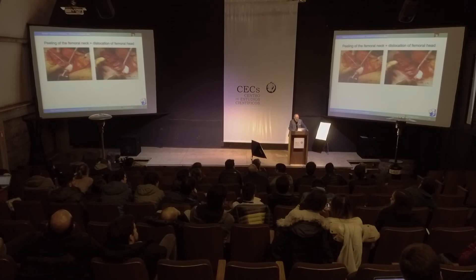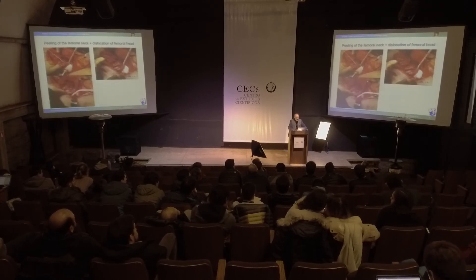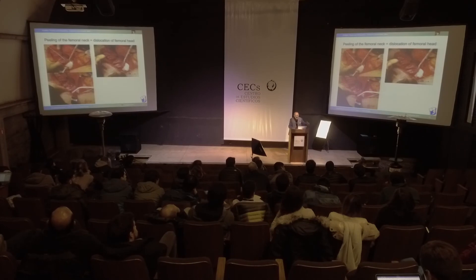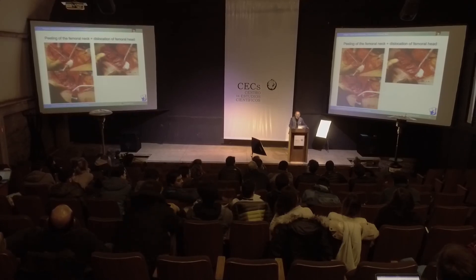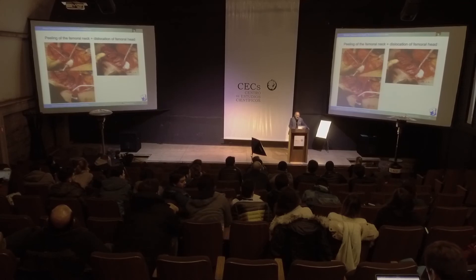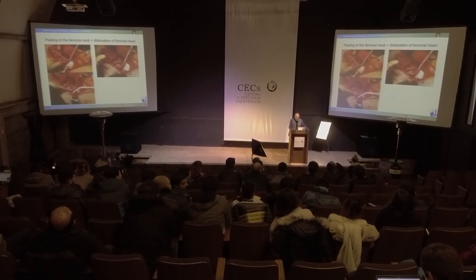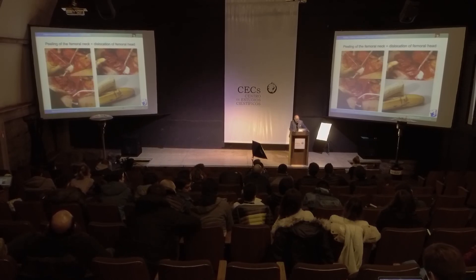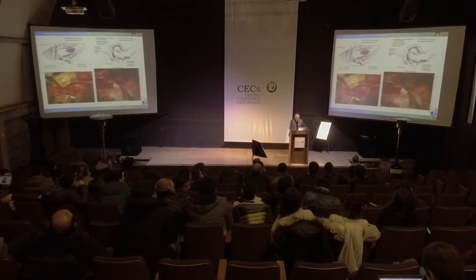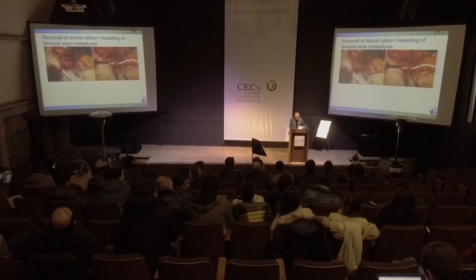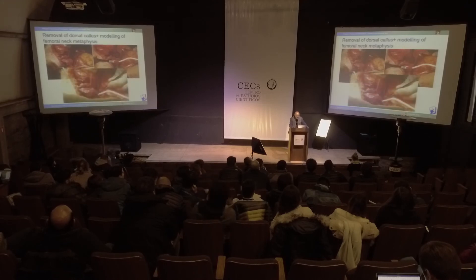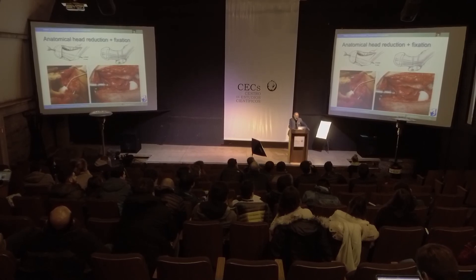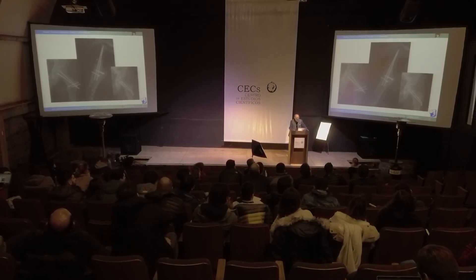After retinacular flap building, we dislocate the head. These are the famous retinacular flaps — you should read the literature. Then you see the obliquity of the neck, which is a sign of chronic disease, even if the case was unstable. The head is inside and we have the neck out. We reshape the neck correctly, cut all the callus away, then make an anatomical reduction. You can see the retinaculum with the vessels preserved. Then we close the wound and have an absolutely anatomical situation.